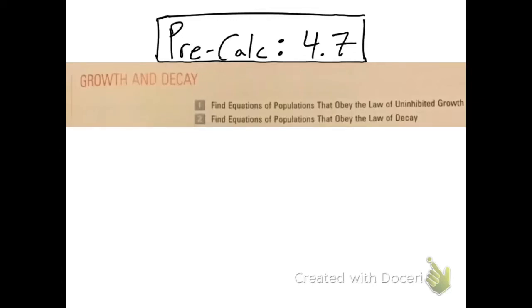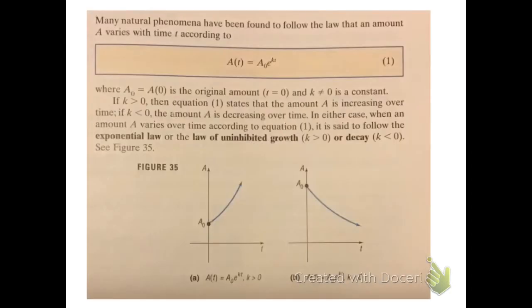Today we're looking at section 4.7, which deals with growth and decay. We're looking for equations of populations that obey the laws of growth and decay. These should look familiar because we did very similar things in section 4.6 dealing with money instead of bacteria or radioactive decay — it's really the same general concept with different substances.